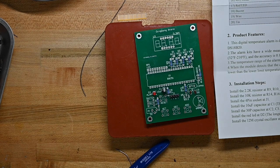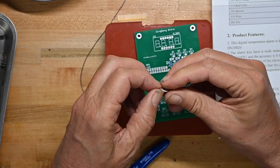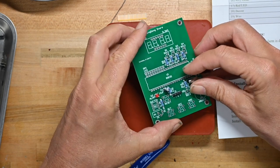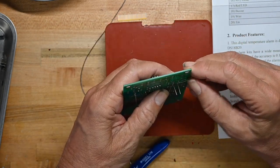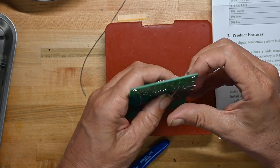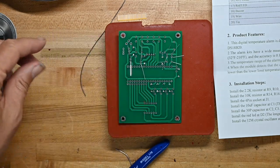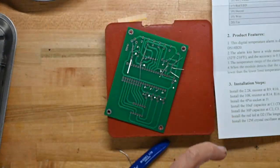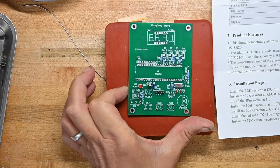And now we'll put the 12 meg timing crystal for the microprocessor in. These are also not polarized. They can go in in any direction. And before we flip over the page, I'll go ahead and solder these down.